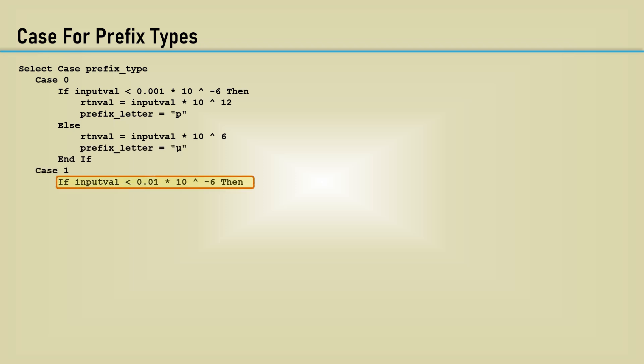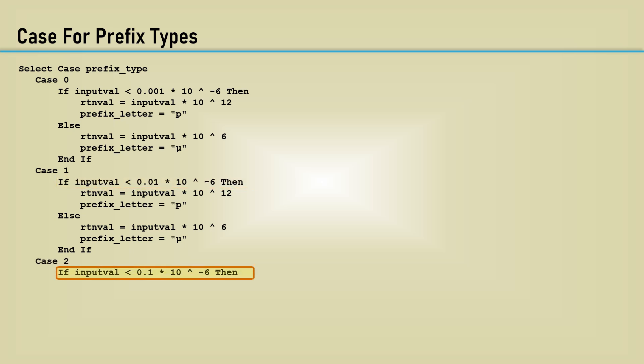For the case is one, if the input value is less than .01 micro, then the return value is the input value multiplied by 10 to the 12th, and the prefix letter is P. Then so on and so forth for the input value of .1.